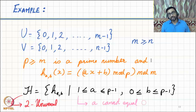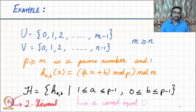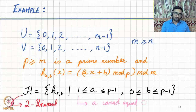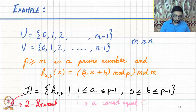We're going to skip the proof, but it suffices to know that this is a two-universal family of hash functions, and the construction is quite straightforward. One minor technical detail: b ranges from 0 to p−1 but a only ranges from 1 to p−1. So to pick a hash function uniformly at random, we pick a uniformly from 1 to p−1 and b uniformly from 0 to p−1, and that immediately implies our choice of h_{a,b}.